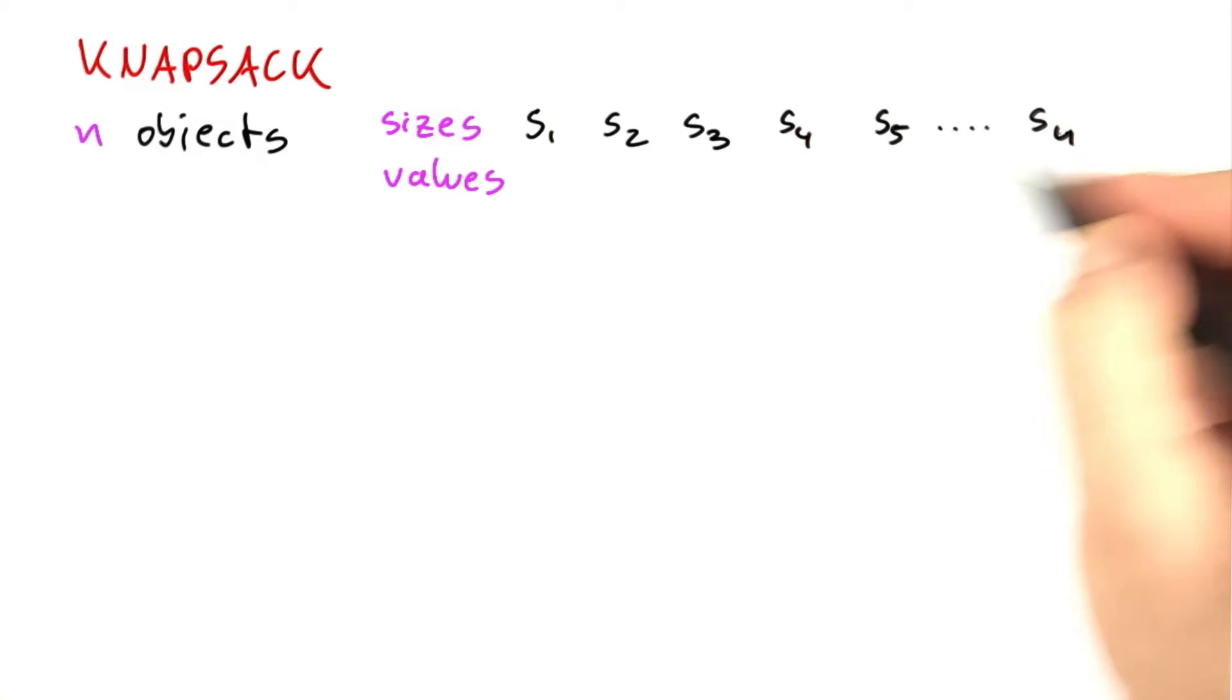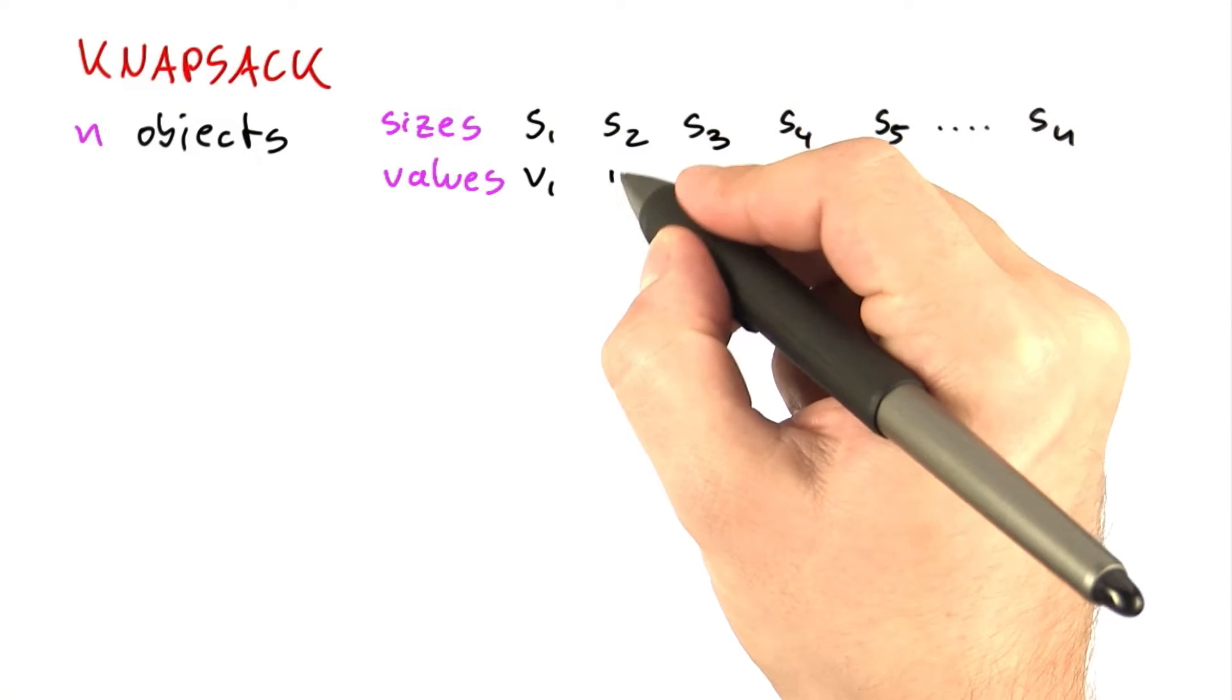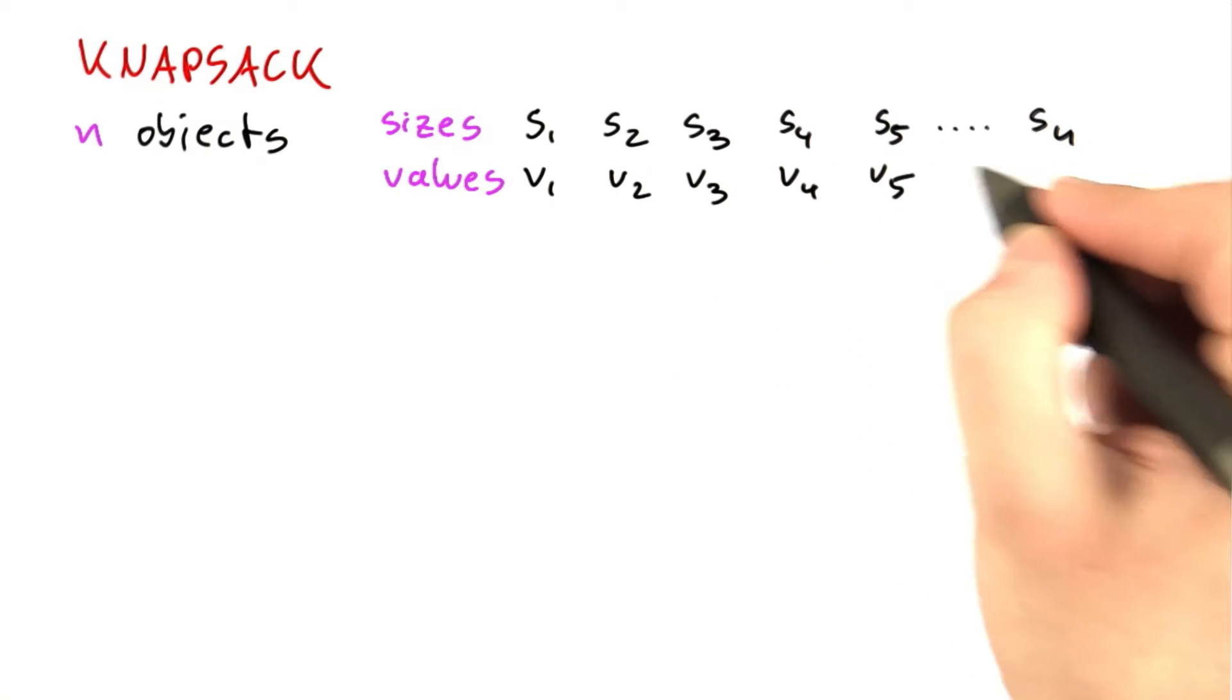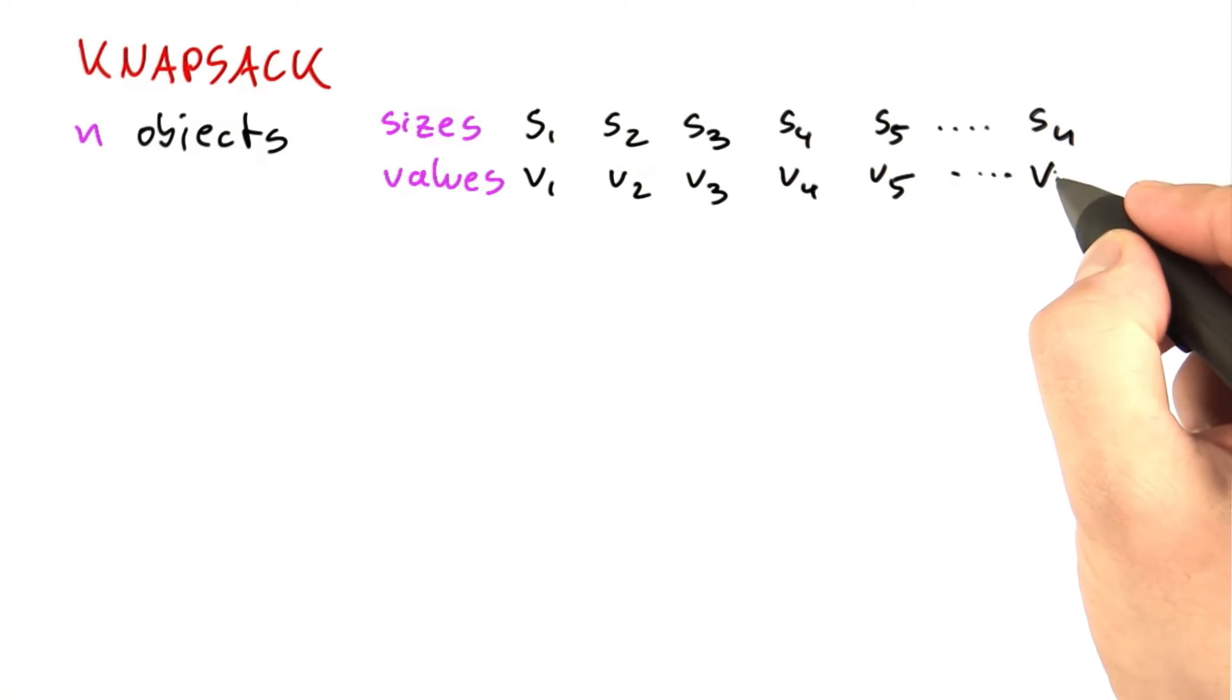Now let's have a closer look at approximation. And again, we're assuming that we're given an instance of knapsack, which means we have n objects, and the sizes and the values of those objects are given to us.